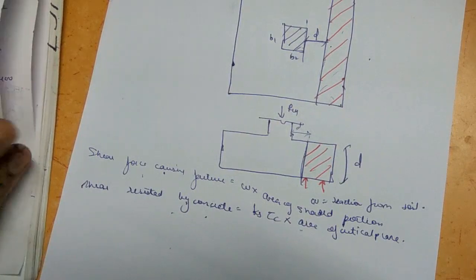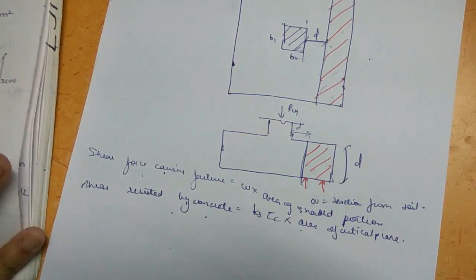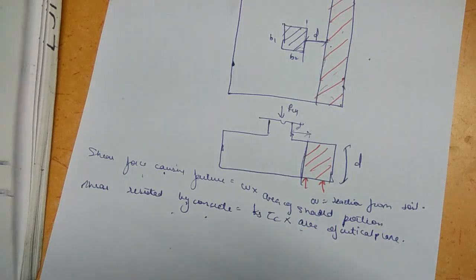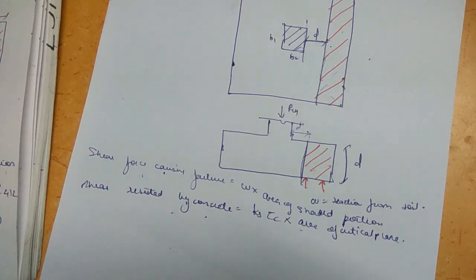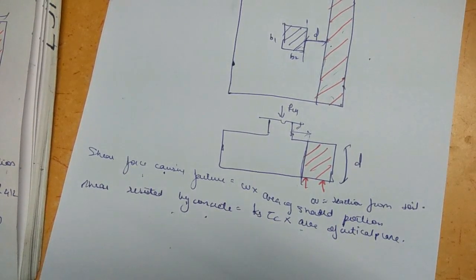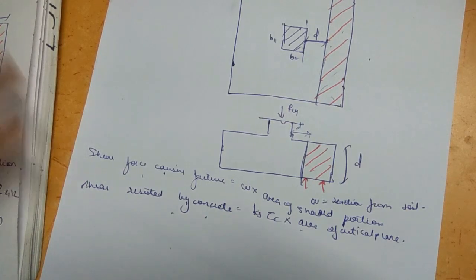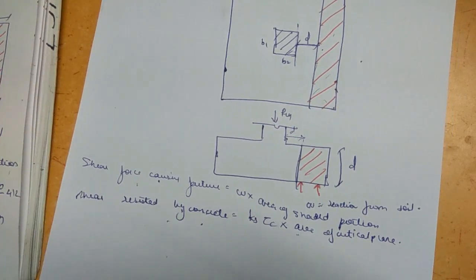That covers all the checks for designing a footing. Two additional checks are the development length check and the check for load transfer, which are similar to what we did for slabs. We will go through those in the actual design problem in the next video, which will be a solved problem on a rectangular footing. Please watch the next video.